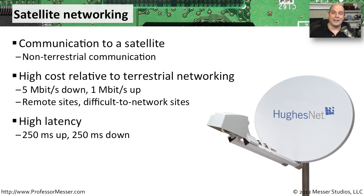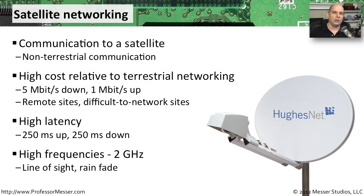A significant disadvantage of satellite is that latencies are quite long. The signal has to travel all the way up into space and back down to Earth, then back to the satellite and back to you again — resulting in latencies of around 250 milliseconds up and 250 milliseconds down. This is a very long time for network connectivity, making real-time functions difficult. Satellite also uses high frequencies around the 2 gigahertz range, it requires line of sight, and is susceptible to rain fade — where connectivity decreases or disappears completely during rain.